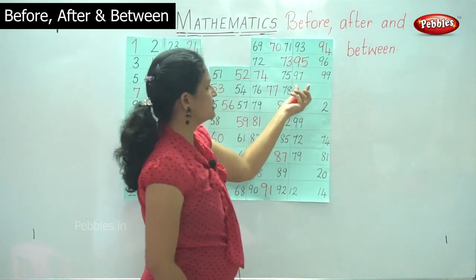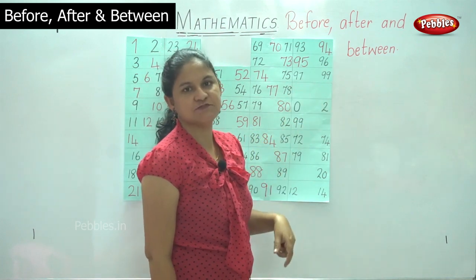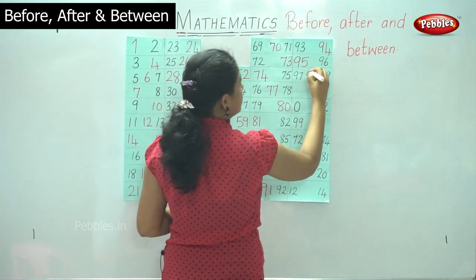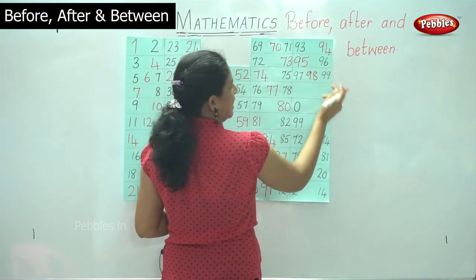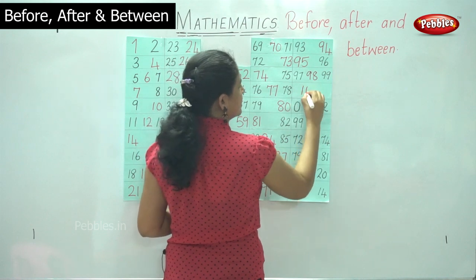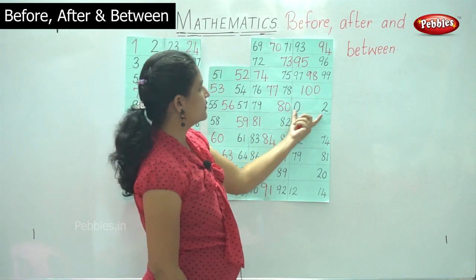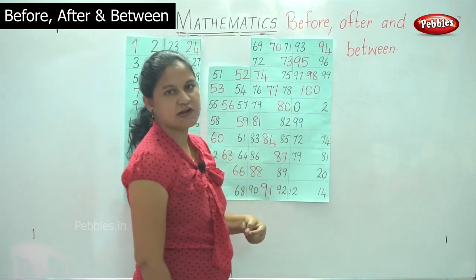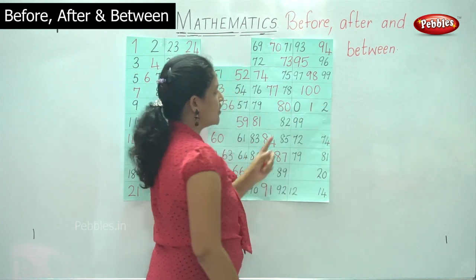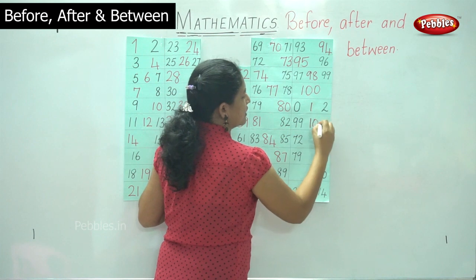We have numbers ninety-seven and ninety-nine, and what comes between ninety-seven and ninety-nine is number ninety-eight. After ninety-nine we have number one hundred. Then, between zero and two, what number comes between zero and two is number one. What comes after ninety-nine is one hundred.